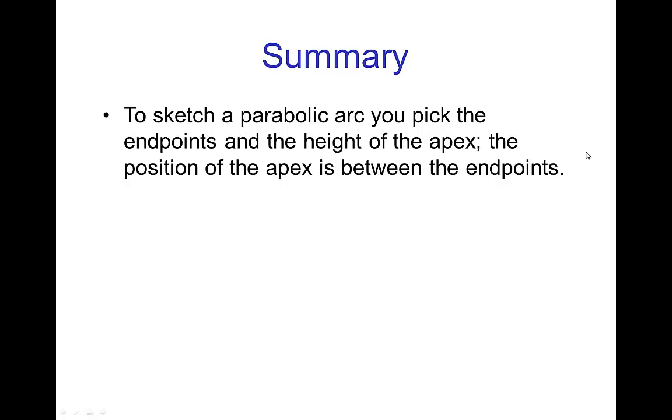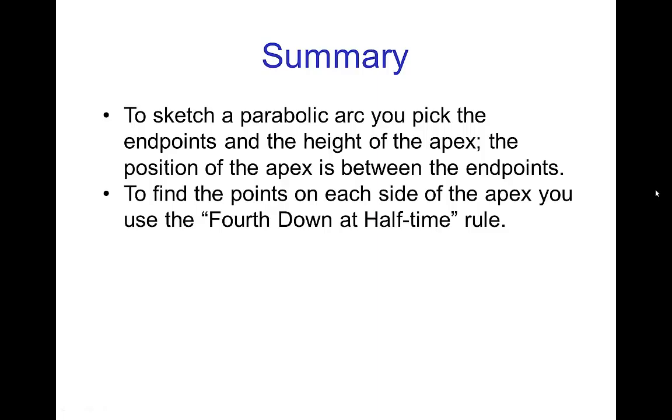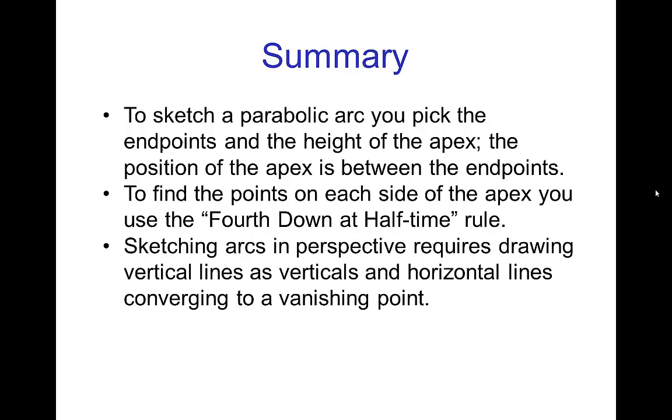So in summary, to sketch a parabolic arc, you pick the starting and ending points. And you pick the height that you want the apex. Then the position of the apex is between those two endpoints. To find the points on each side of the apex, you use the fourth down at half-time rule. And then sketching arcs in perspective, you just have to remember that vertical lines are drawn as verticals. However, horizontal lines have to converge to a vanishing point.